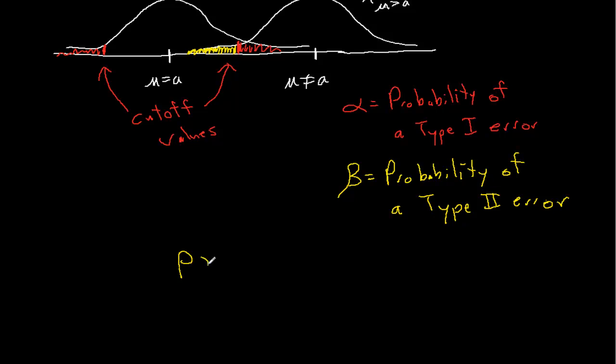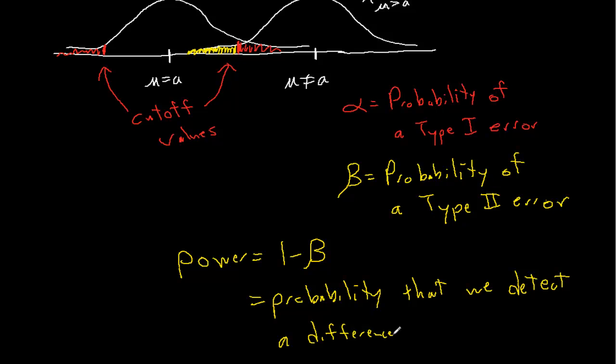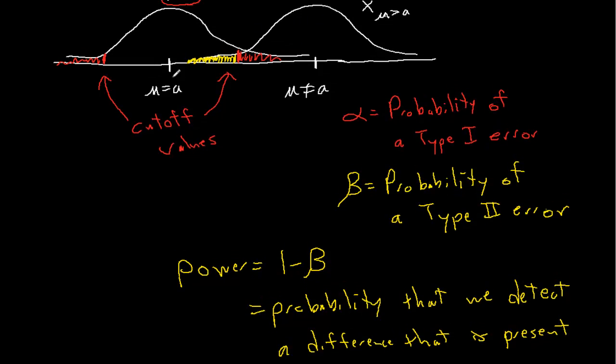And a very closely related idea is the power. Power is 1 minus beta, and that is the probability that we detect a difference that is there, that is present. And it's not a constant. Just like beta is not a constant, it depends on where your mu value actually is. If mu were closer, then beta is going to be a lot higher. If our mean among the population is really close to A, but it's not equal to A, then it's going to be hard to tell, unless we collect a whole lot of data.